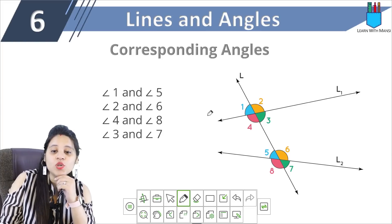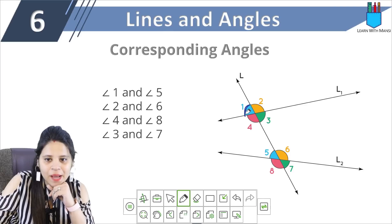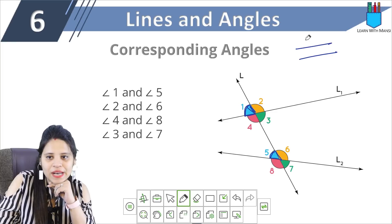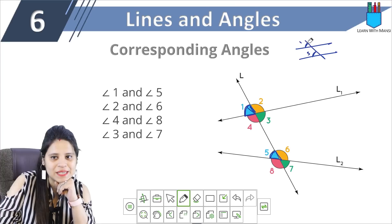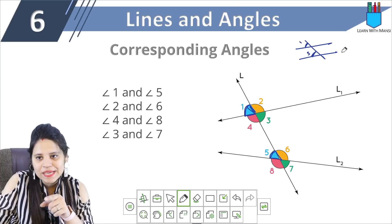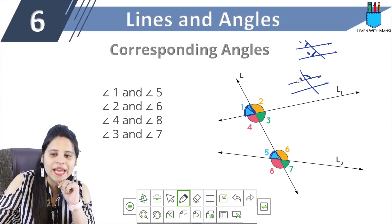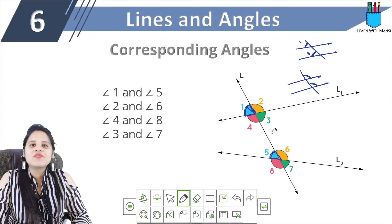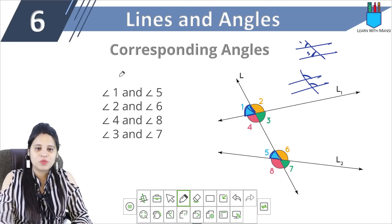Next, corresponding angles. Which are corresponding angles? If two lines are cut by a transversal, corresponding angles are those at the same position at each intersection. For example, one angle is above the line at one intersection and the other is above the line at the other intersection — same position. Pairs of corresponding angles: 1 and 5, 2 and 6, 4 and 8, 3 and 7 — different lines but the same position. Those are our corresponding angles.